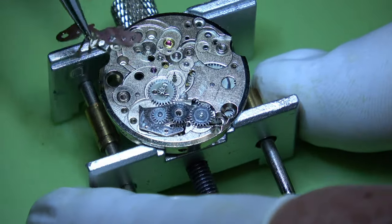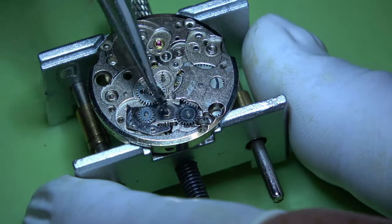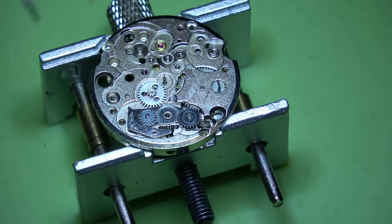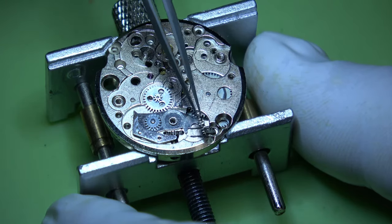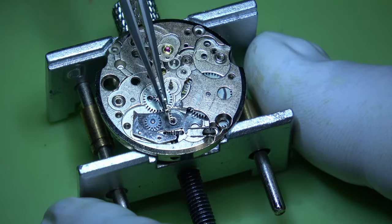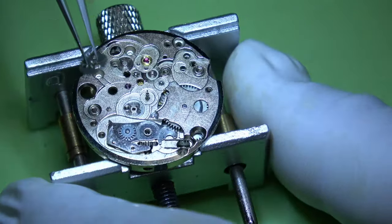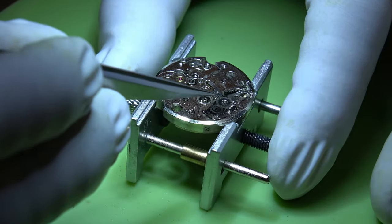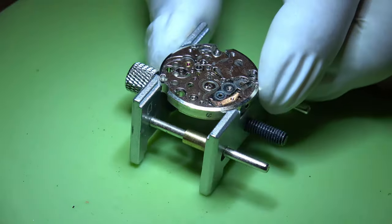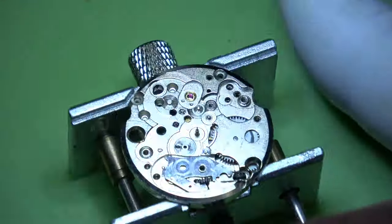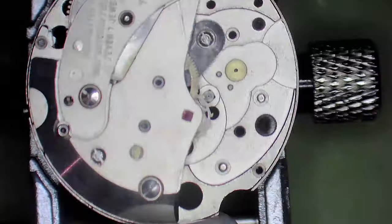We'll remove this spring, then we can remove this set lever cover plate. We can take a closer look underneath, and these three wheels are what set the time and then wind the watch. So this is what is replacing the clutch. When you pull the winding stem out, it'll engage one way. Then when you push it in to wind, it'll engage another way.